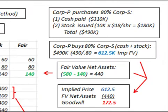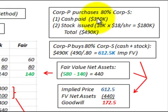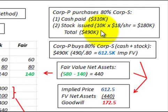Here we're going to look at how we'd prepare a consolidated statement of cash flows. Corp P, the parent, is going to purchase 80% of Corporation S, the subsidiary. They're going to make a cash payment to Corporation S for $310,000 and also issue stock to Corporation S for a value of $180,000. So the total amount of this investment is $490,000.